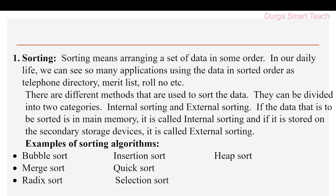Sorting can be in ascending order or descending order — smallest to largest or largest to smallest. In daily life we see many applications using sorted data, such as telephone directories where all numbers are in sorted order, merit lists, student roll numbers, and hall ticket numbers, which are all in ascending order.